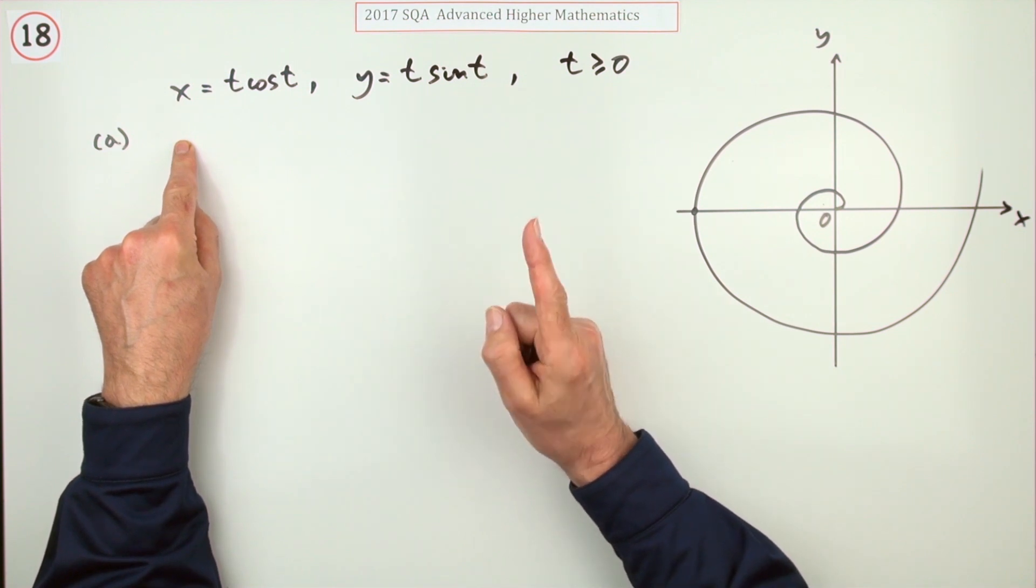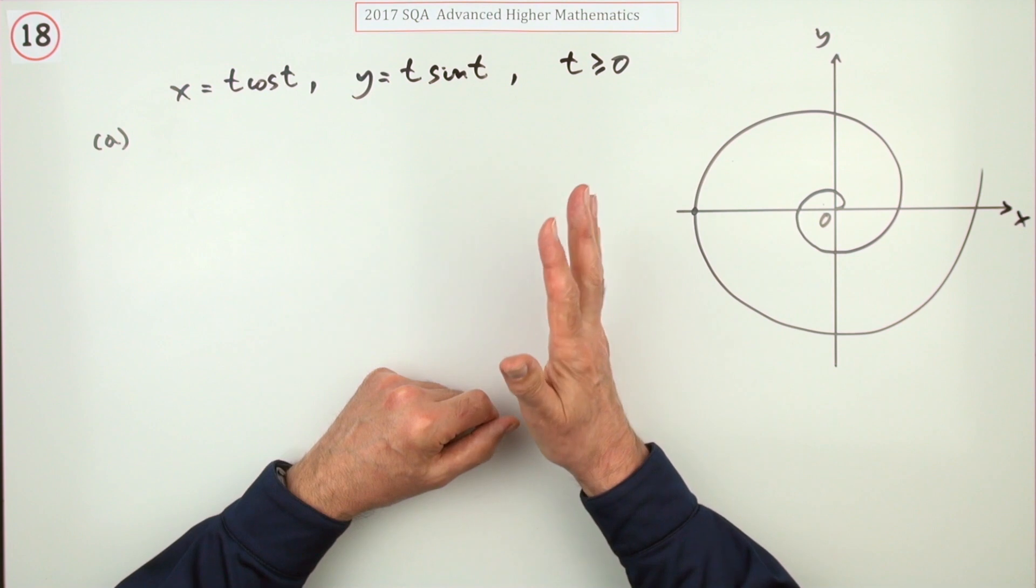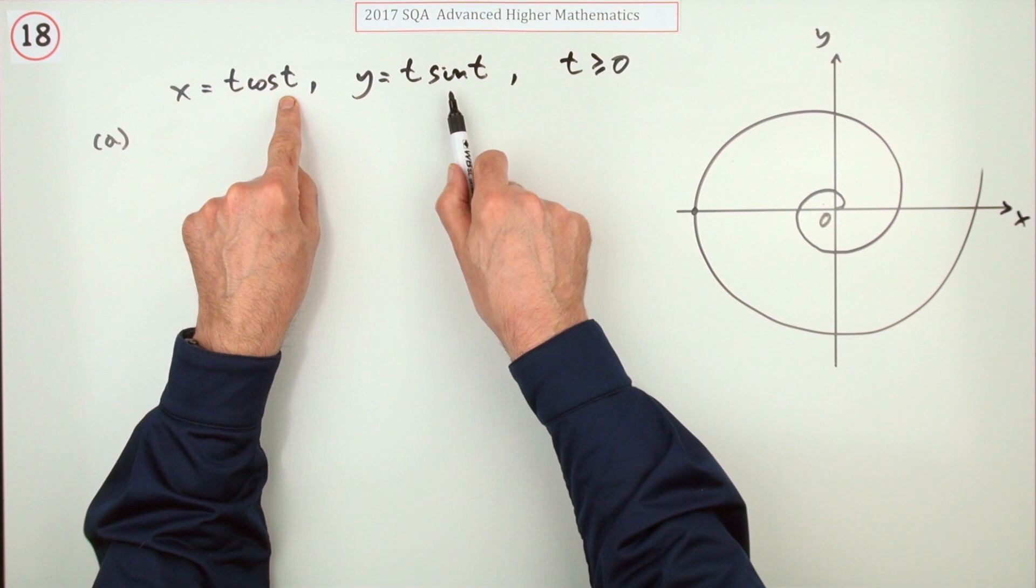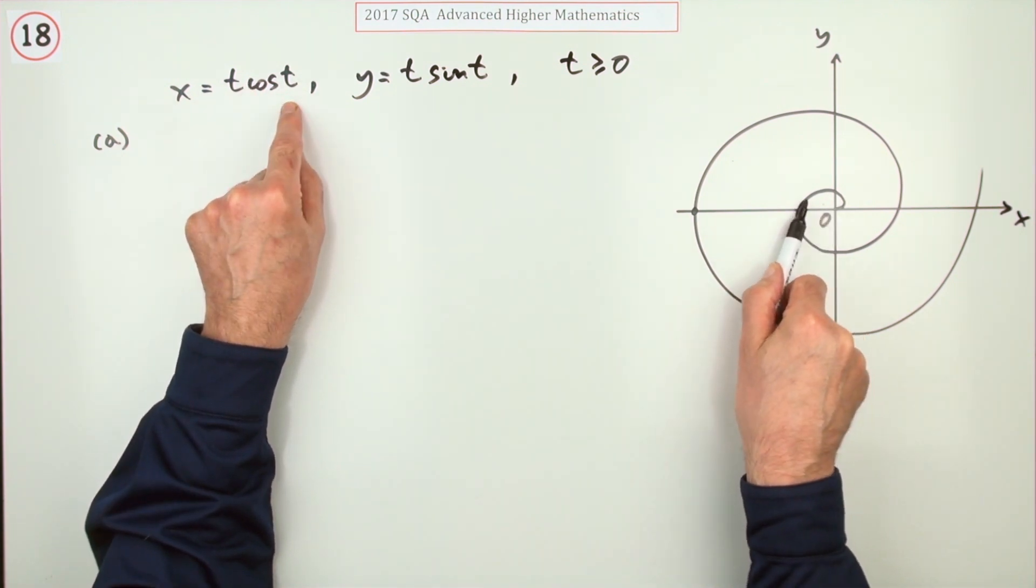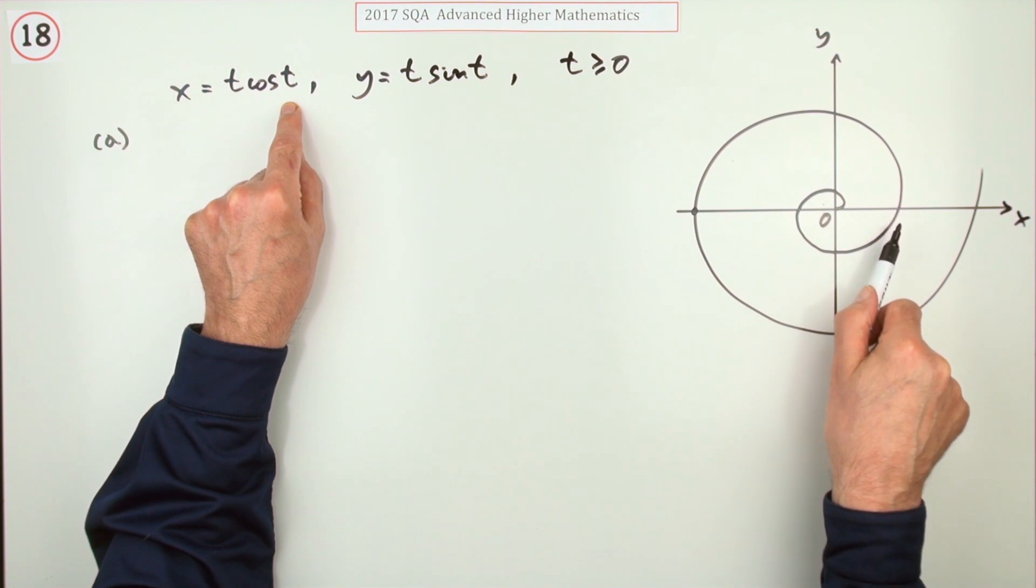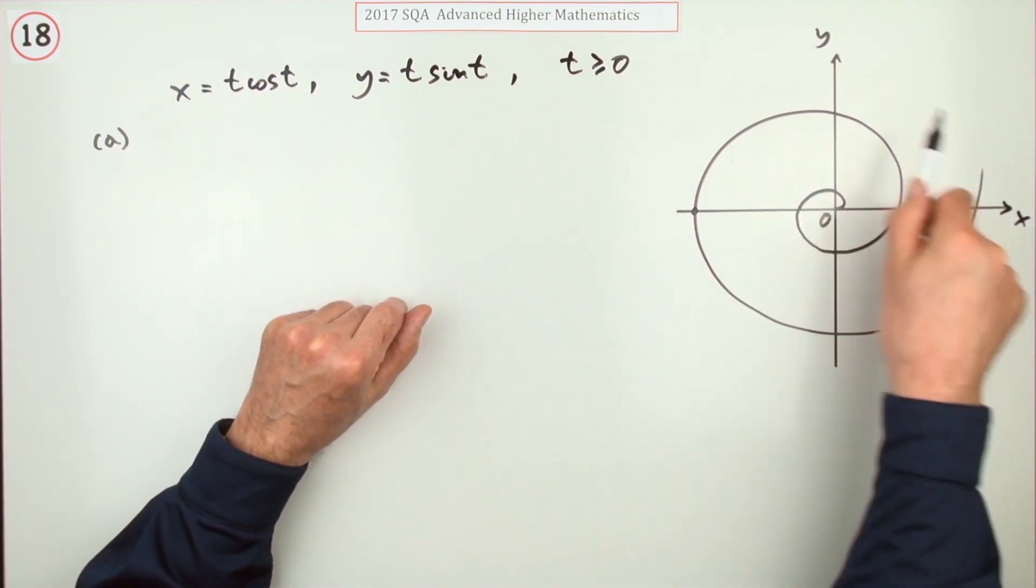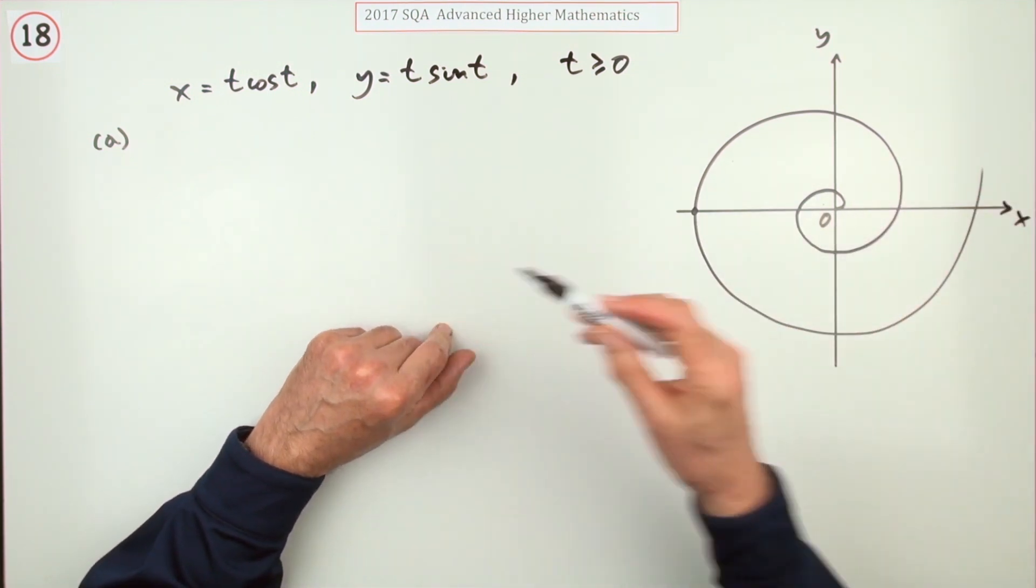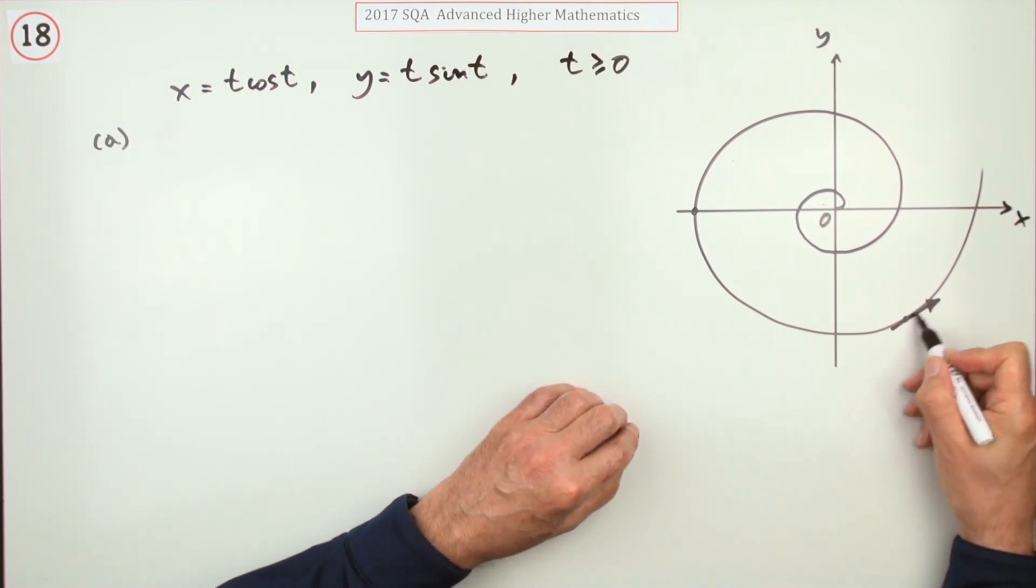The question was what's its instantaneous speed at any given time? That was the first one, I think it was five marks. Well, t notice the sine and cos t would be equivalent to time, but t is equivalent to the angle it travels through. I think they said it was two complete circuits of it spiraling outwards.